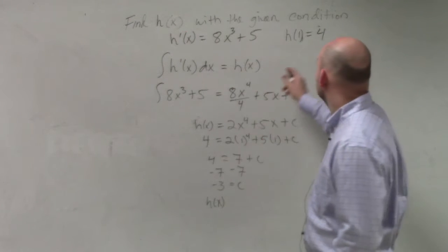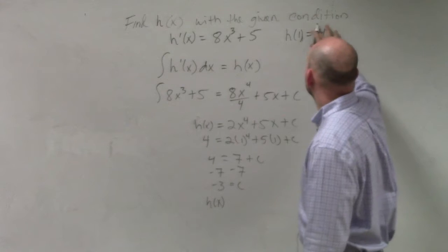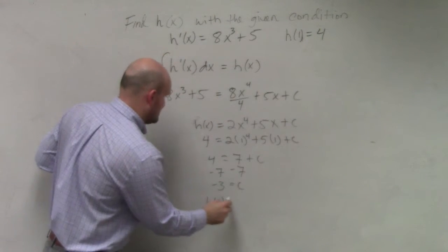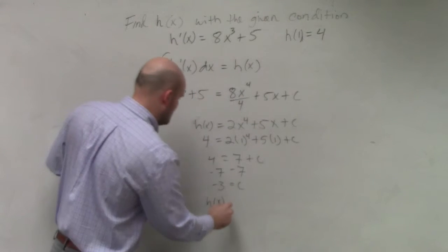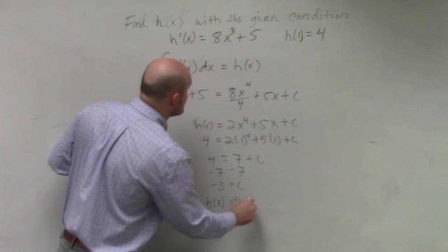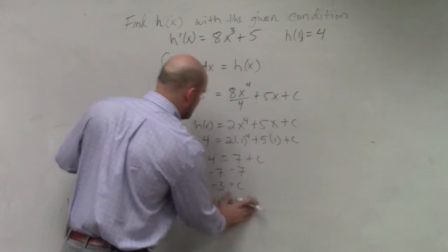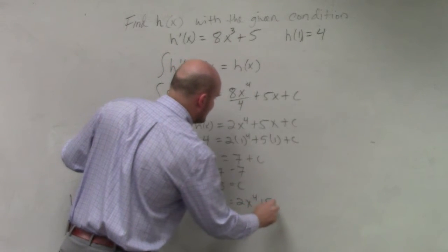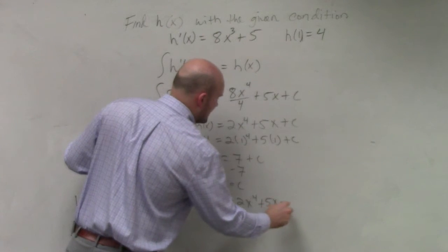That's 7. Oh, I'm sorry. I wrote that down wrong. Well, all right, that's in this case. So h of x equals... I'm sorry, h of x is 2x to the fourth plus 5x minus 3.